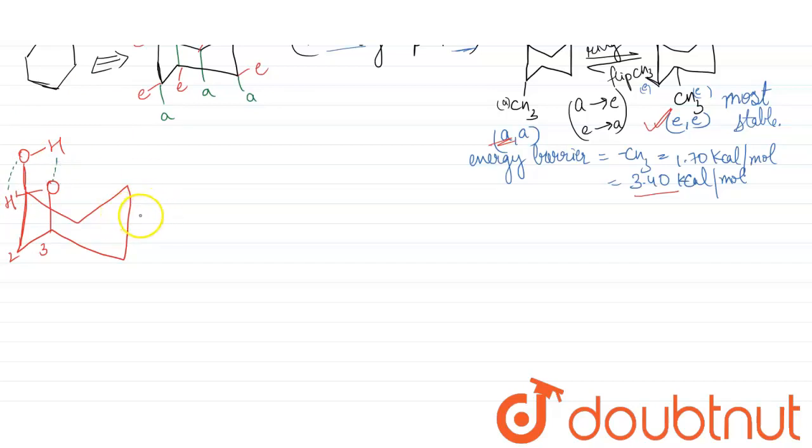And therefore due to hydrogen bonding this structure, axial-axial, these both are axial, so this axial-axial is again not stable because of hydrogen bonding.